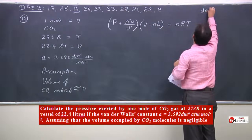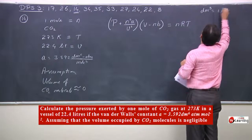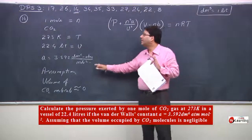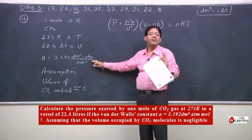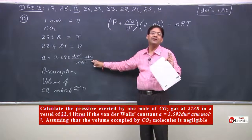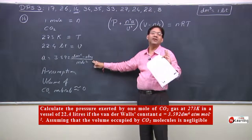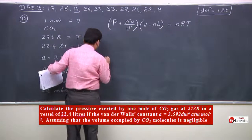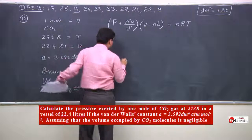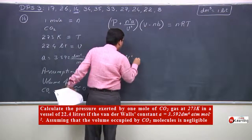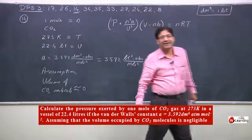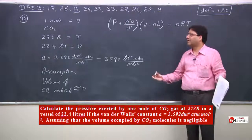There are no irregular units here; all units are regular. There is no need to convert any units. A is 3.592 liter squared atmosphere per mole squared — this is in fact a regular unit.